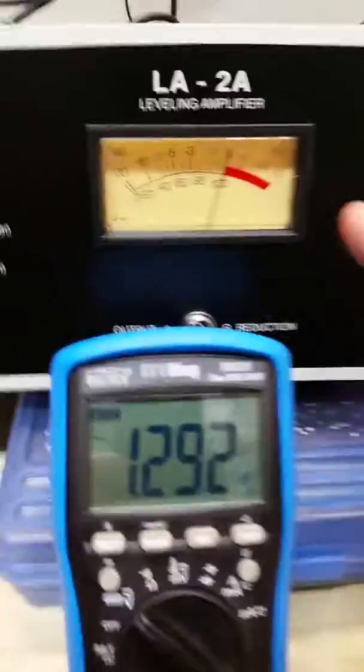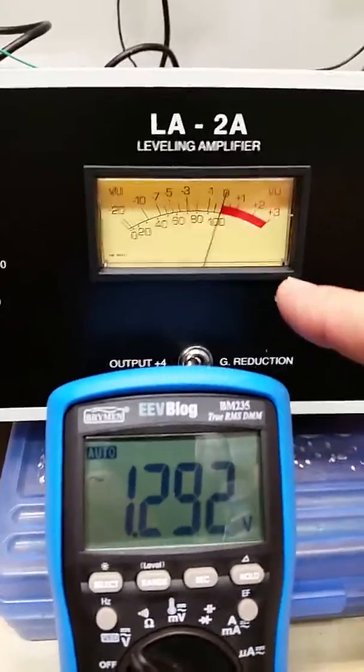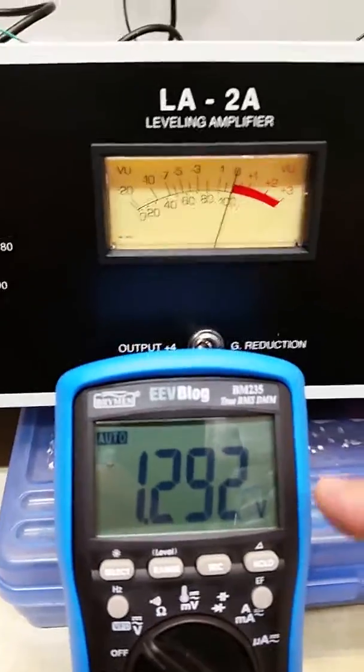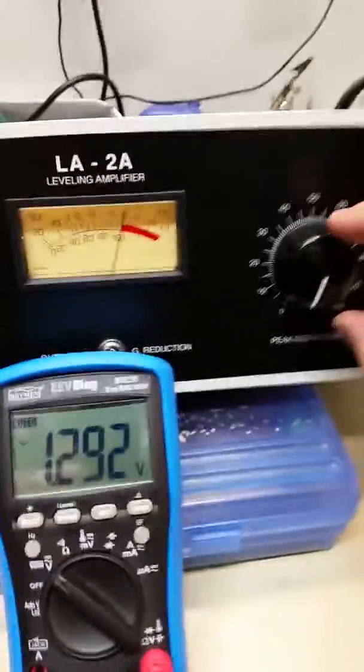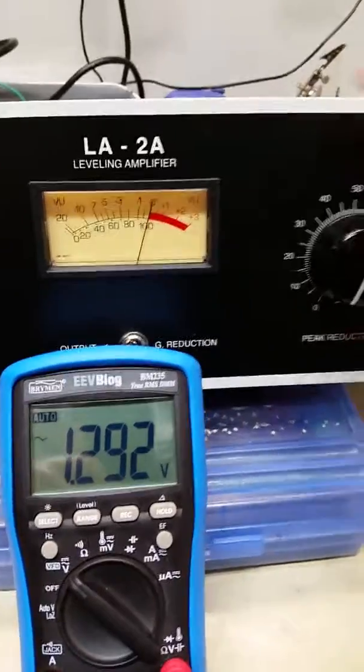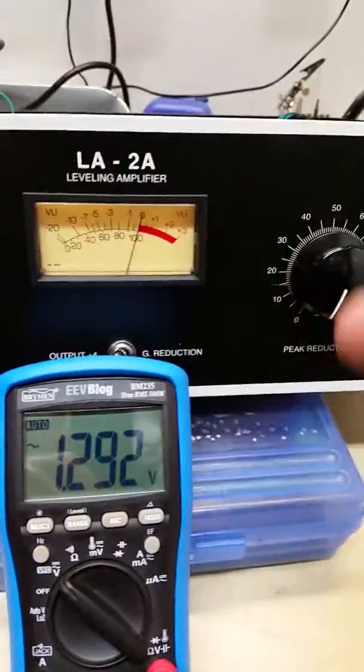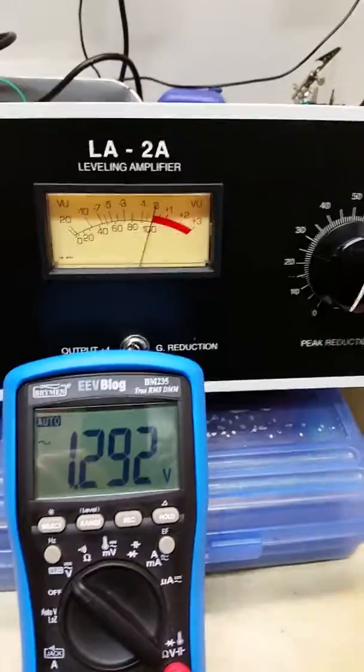Now, when the meter is showing gain reduction, which it's going to show here in a moment, when I turn gain reduction up, the needle should drop to minus 10 and show us what we saw in the other video.